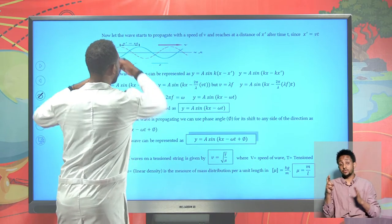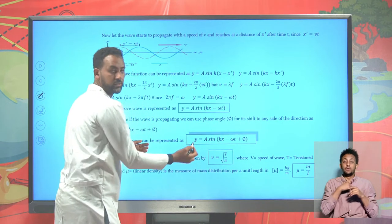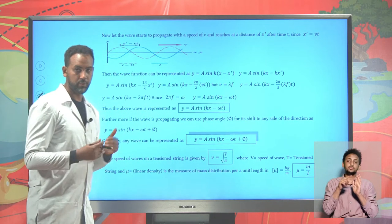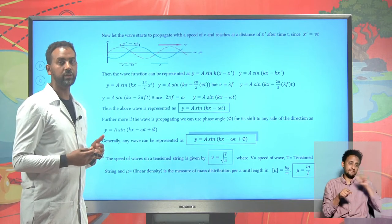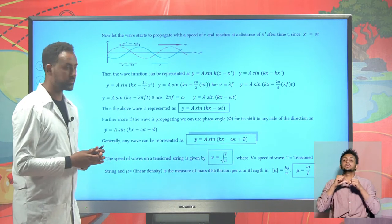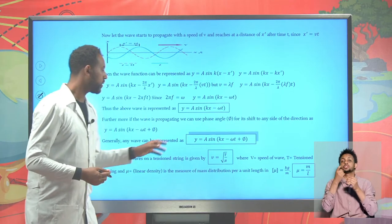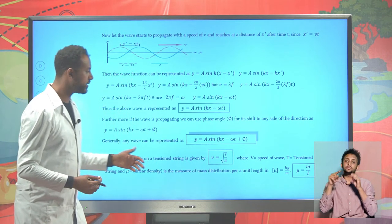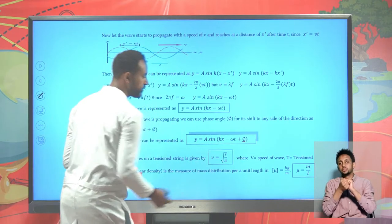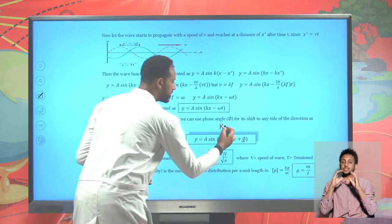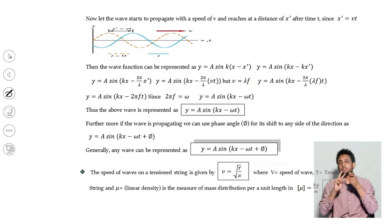If there is a wave tending to the left, it's possible to use a plus sign. For a wave tending to the right side, as usually referenced in textbooks, the general expression of our wave is y = A sin(kx - ωt). If there is a phase shift, it's possible to add φ. Here k is the propagation constant given as 2π/λ, which is very helpful to determine the wavelength of a wave.